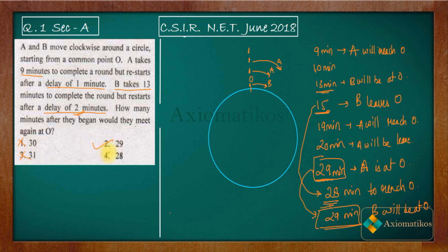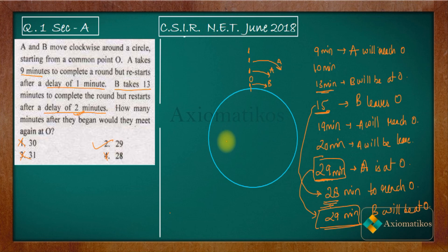We don't need complex mathematics here — we are simply tracking when A reaches O and when B reaches O, checking when B leaves and when A arrives. That's how we solve this problem. If you have any doubts, ask in the comment section, or join our WhatsApp and Telegram groups — links are in the description. Thank you.